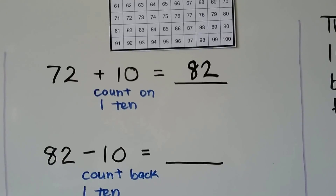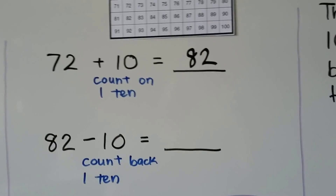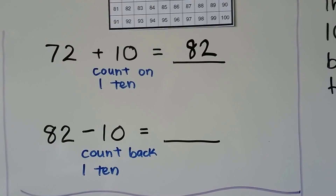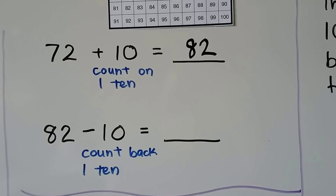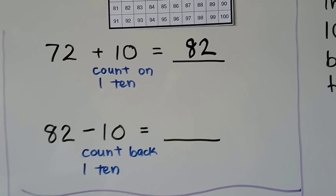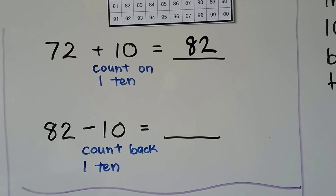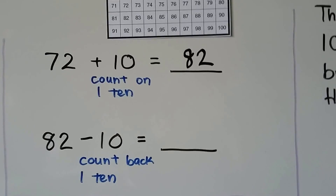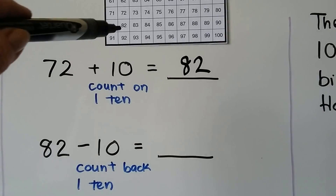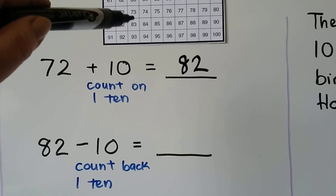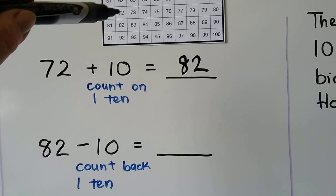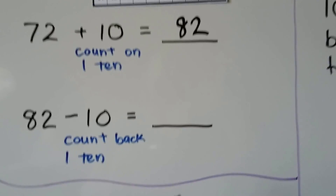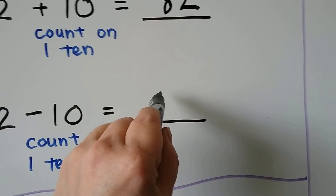We can also do a related subtraction sentence: 82 minus 10, we would just count back one 10. Because of the related number sentences, we can start at the 82 and count back one 10 to 72 — that was the addend in the addition sentence.